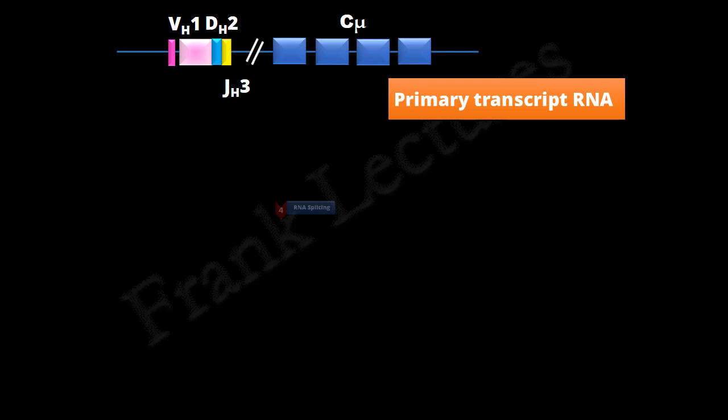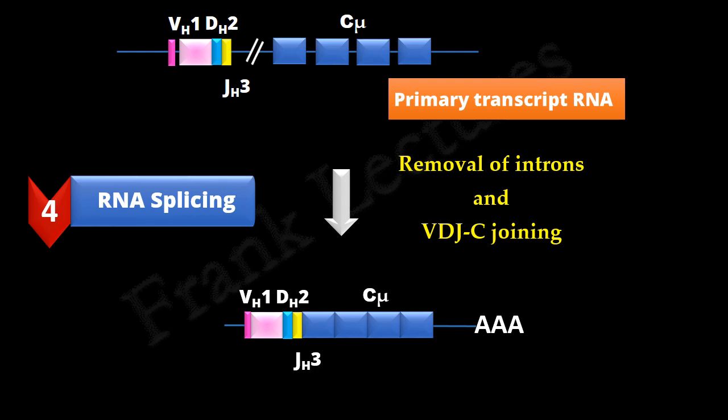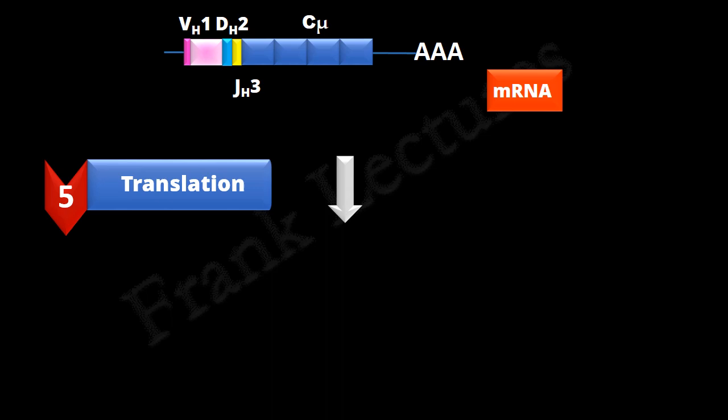In the fourth step, RNA splicing occurs. In the final step, translation occurs and mRNA is decoded into the heavy chain polypeptide.